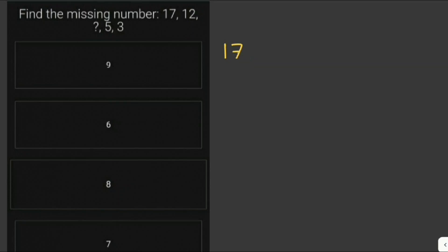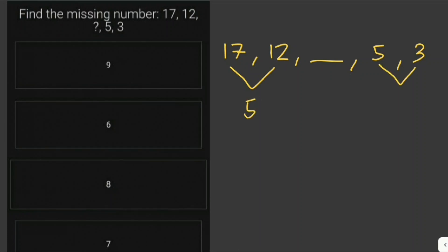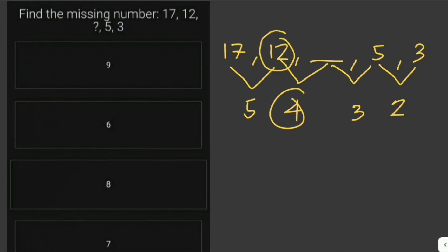So: 17 minus 12 gives a difference of 5. 5 minus 3 gives a difference of 2. The difference between 5 and the missing number should be 12, wait — the differences should follow the pattern. Subtracting 12 and 4: the missing number should be 8, because 8 minus 5 is 3. So the answer is 8.